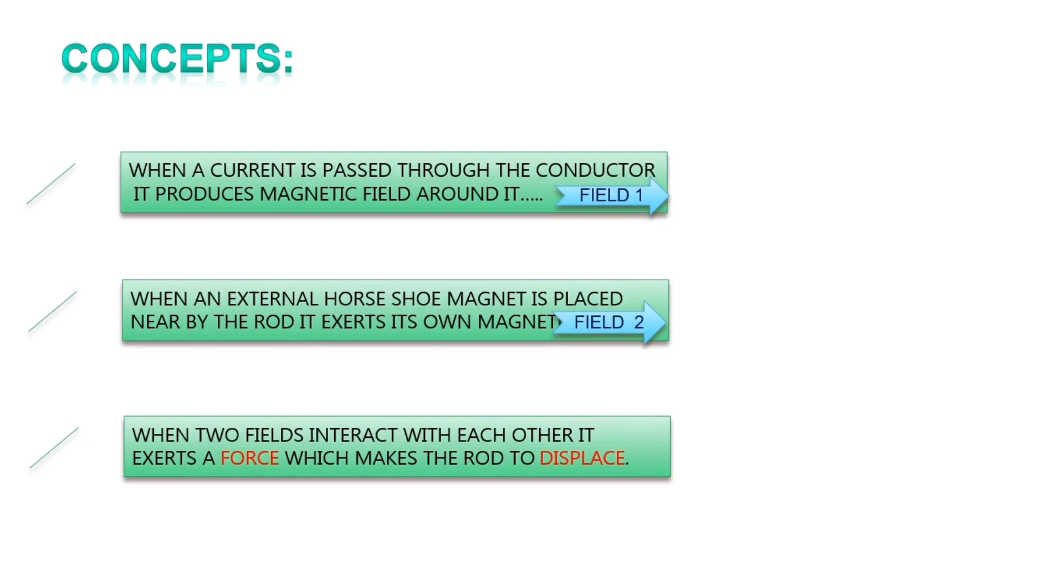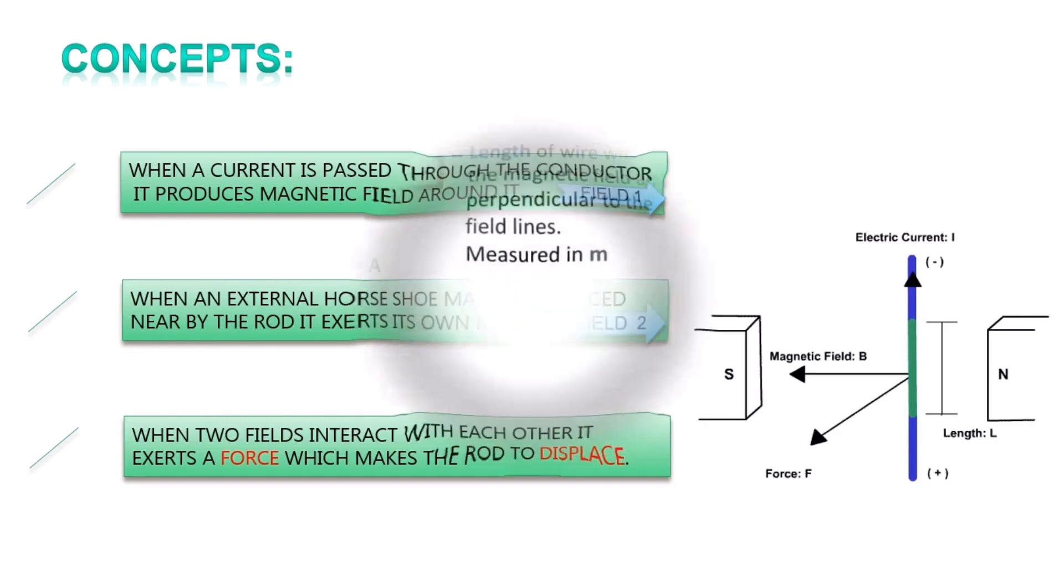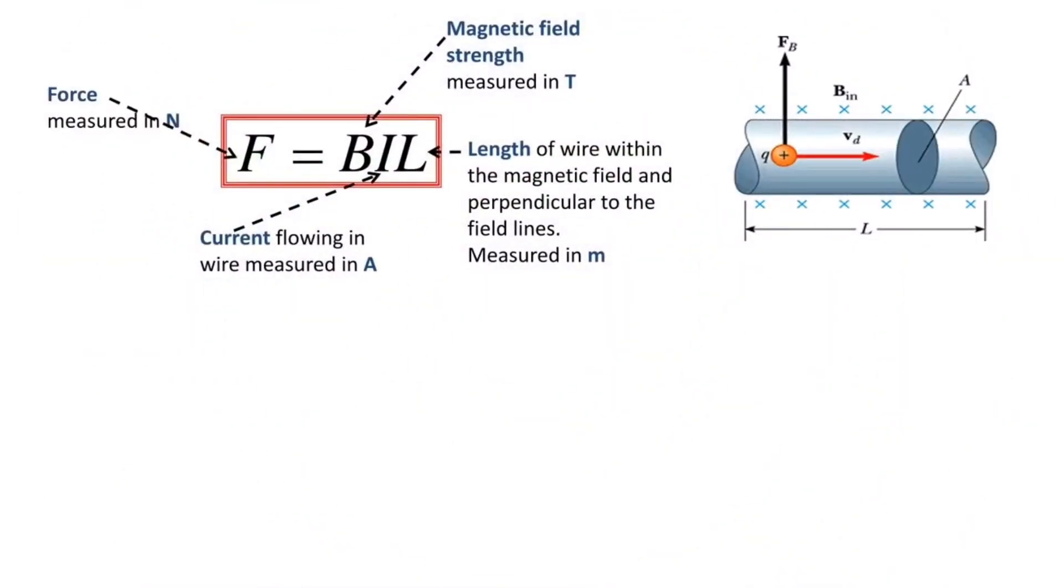Whenever the current and magnetic field are changed in the given setup, accordingly, the rod also behaves or displaces, which means that the force F, the current I, and magnetic field B are related to each other. When all these are put together, we get a formula like this: F is equal to BIL, where L stands for length of the conductor. Whenever magnetic field, current, or length is increased or decreased, accordingly, the force is also changed.